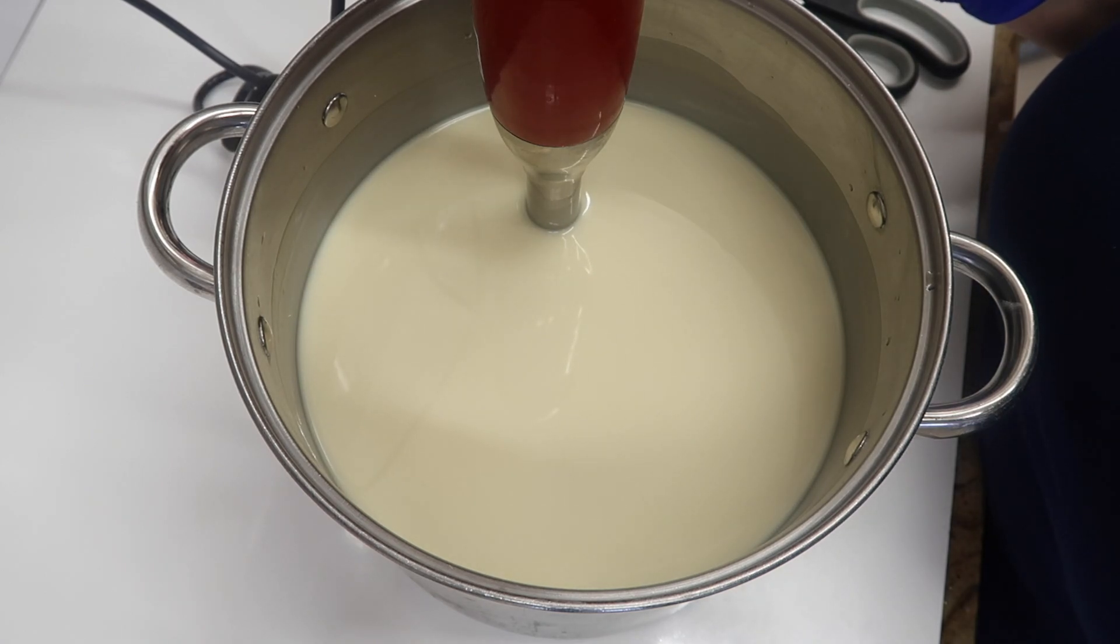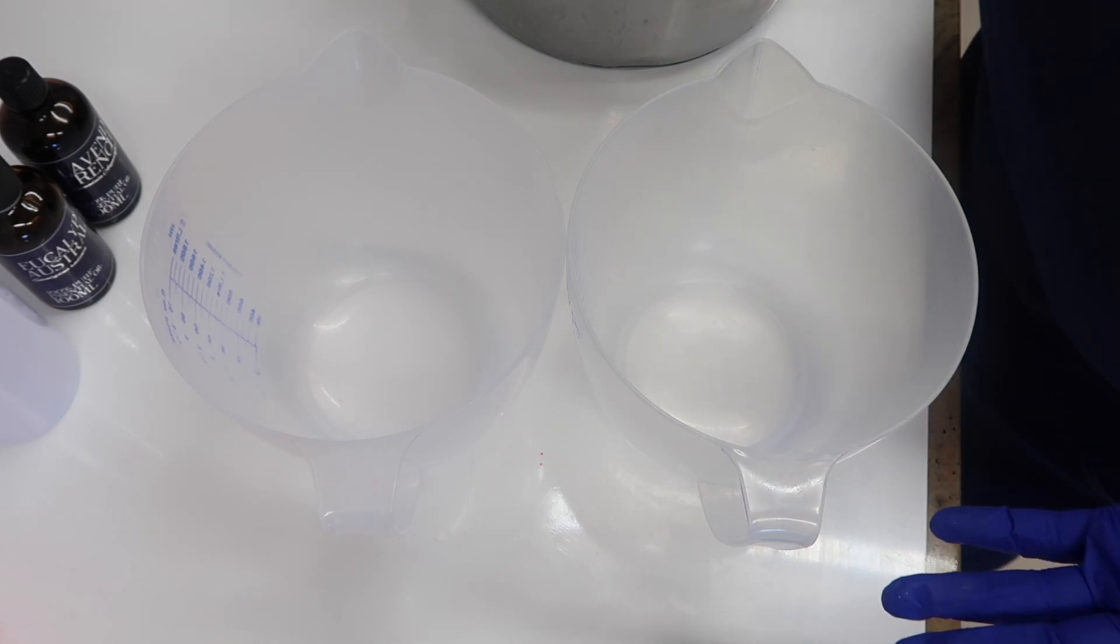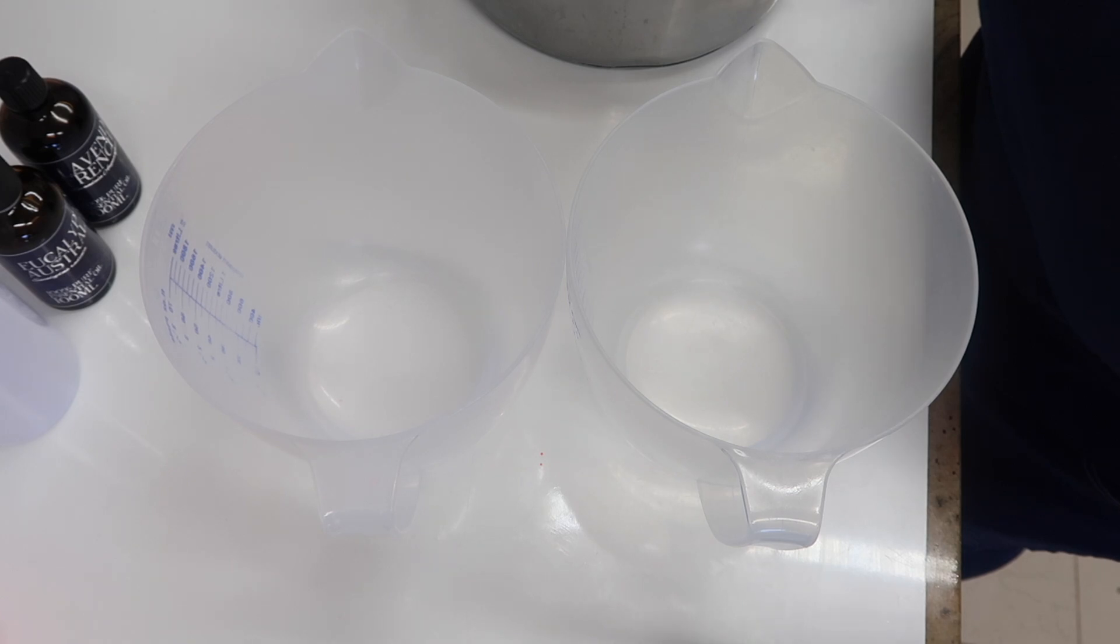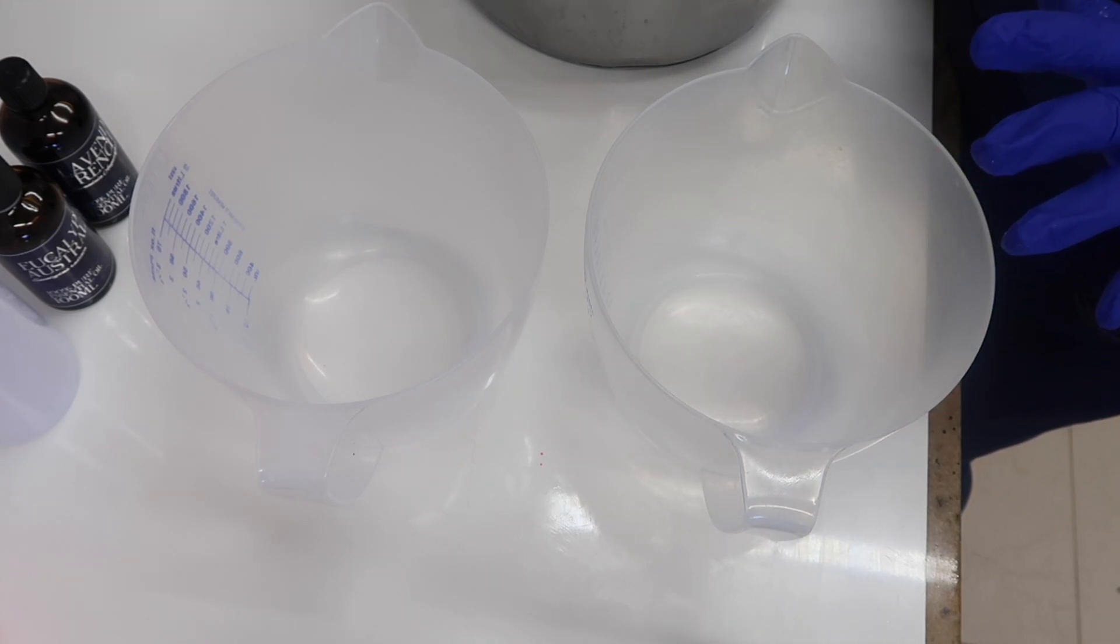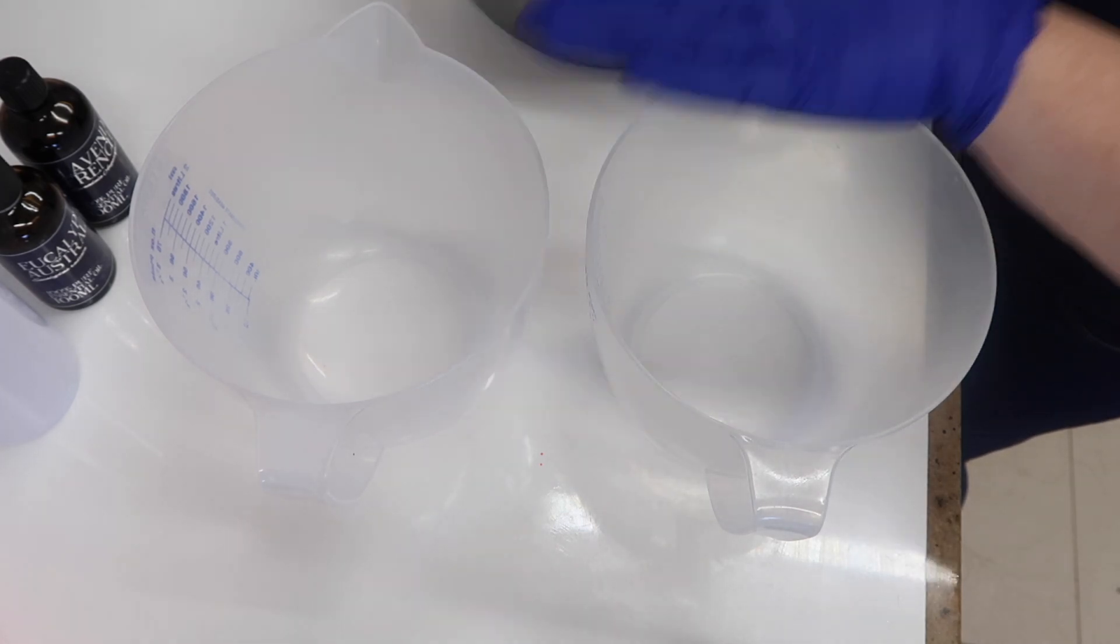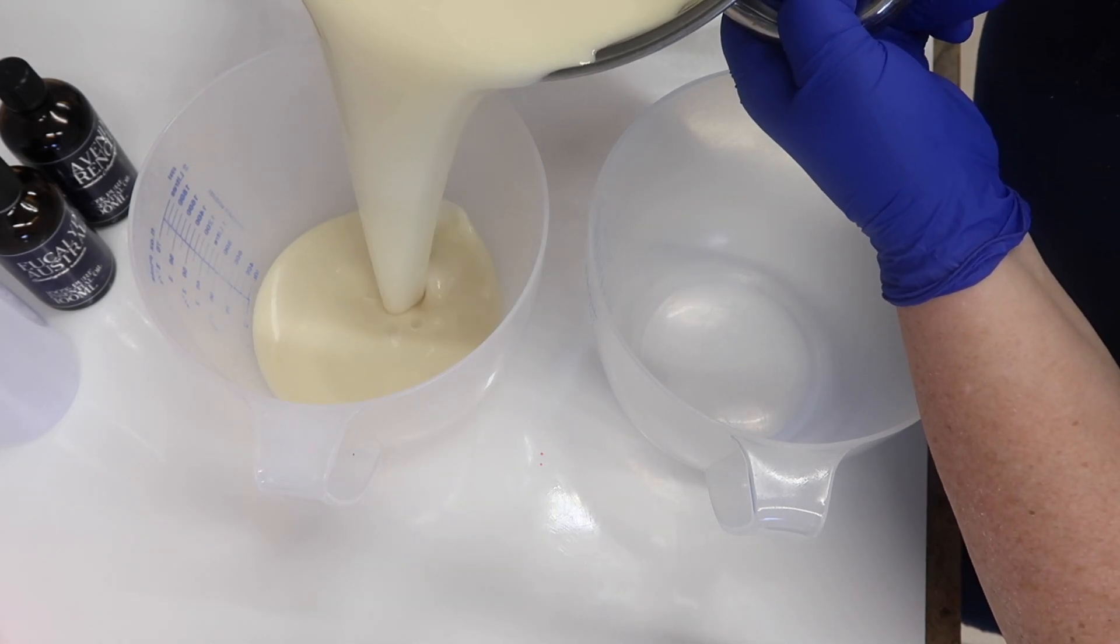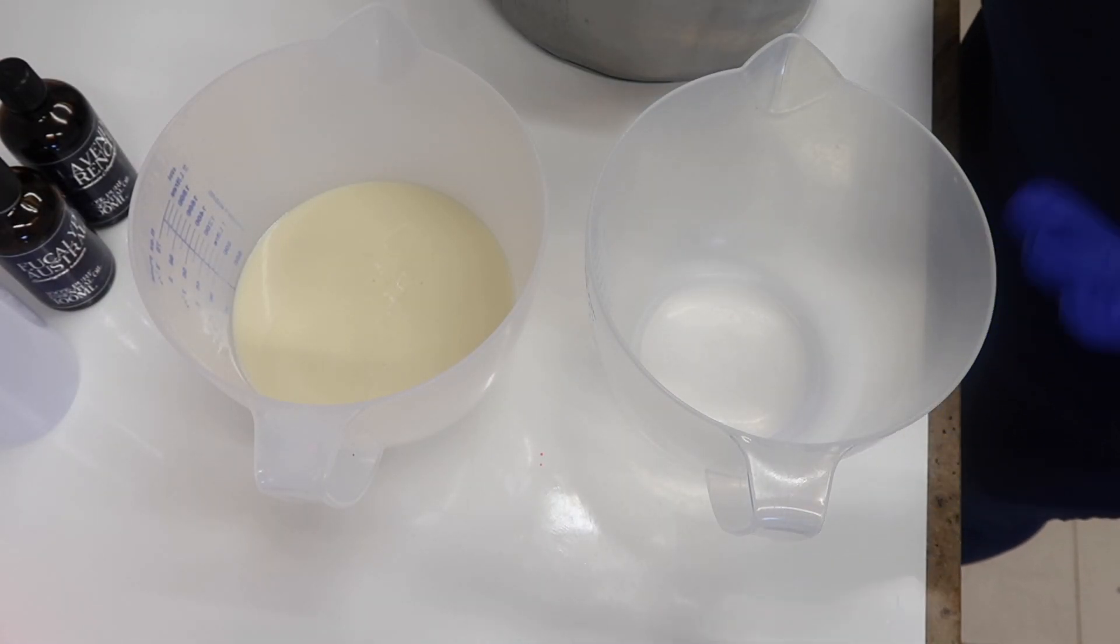Now we're going to divide this batter. I think the loaf mold I'm using today takes three kilos of soap but I can't quite remember. The recipe in the description will probably be a three kilo batch. I'm thinking my first layer will need to be about two kilos, so I'm going to do a kilo and a half in this container and half a kilo in this container. The reason I'm doing that is because I want a bit of an in-the-pot swirl for the first layer.